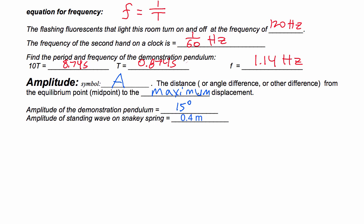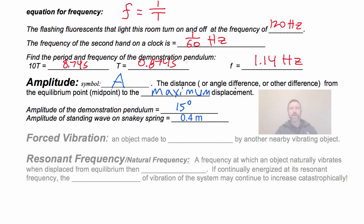Notice that in this case we're measuring the amplitude in meters, whereas for our pendulum we measured it in degrees. You could also measure amplitude in pounds per square inch or newtons per square meter — those are pressure units — if we're measuring the amplitude of a sound wave.